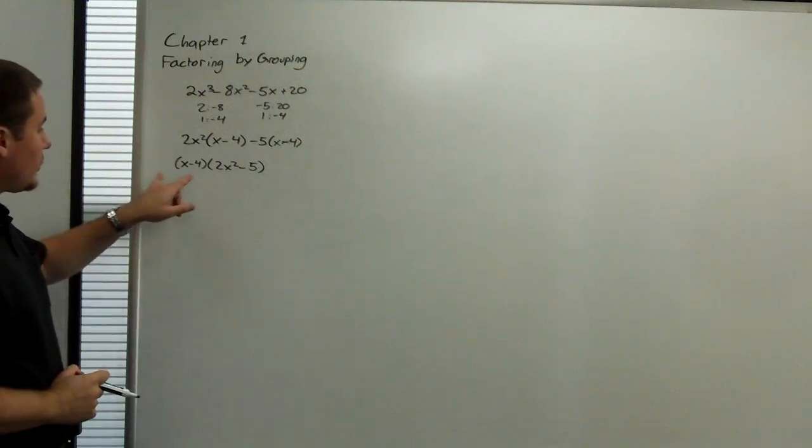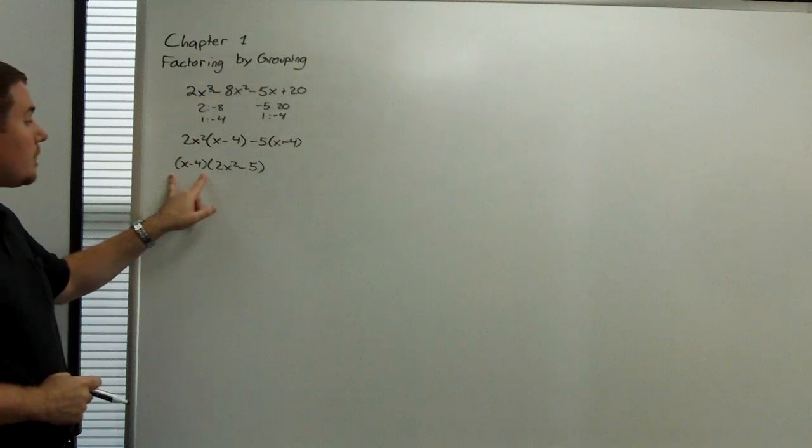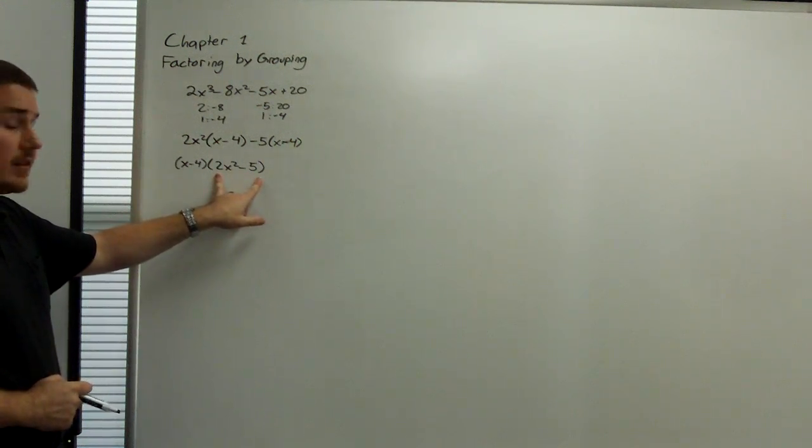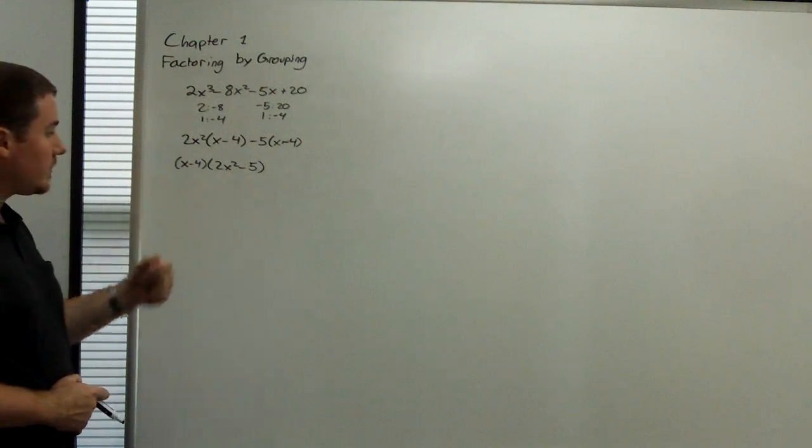Now, we can check x minus 4, being a binomial of lowest degree, is prime. 2x squared minus 5, neither of those are perfect squares, so it's prime as well. Now, with these factors being prime, we are done.